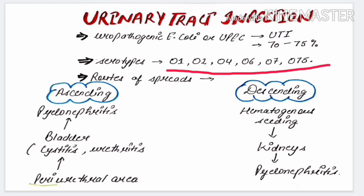If E. coli is present in the host, how will it spread into the body? There are two routes: ascending and descending. In the ascending route, E. coli first colonizes the periurethral area. After colonizing the periurethral area, it ascends to the bladder.